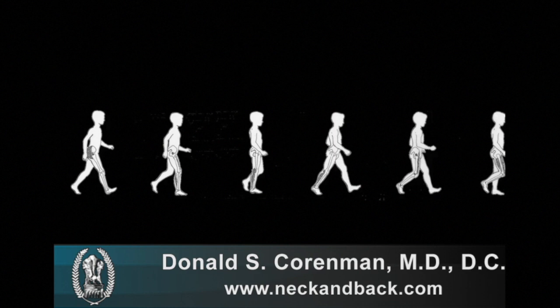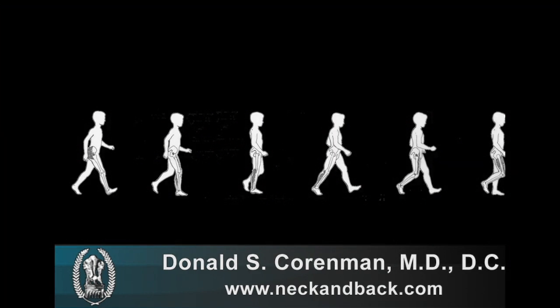Walking requires a symphony of various nerve and muscle functions to develop the normal gait that we all take for granted. Normal gait requires an intact and functioning peripheral nervous system to send messages from the muscles and joints to the brain and of course receive messages back. Good balance, which is generally a central nervous system function, and normal muscle function are required.